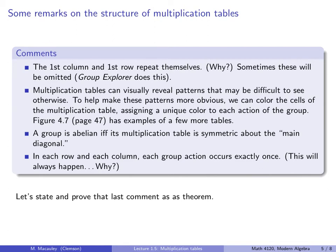Finally, in each row and each column, each group action occurs exactly once. I claim this will always happen. Think about why. Why can a column or a row not have the same element twice? Let's state and prove this last comment as a theorem.